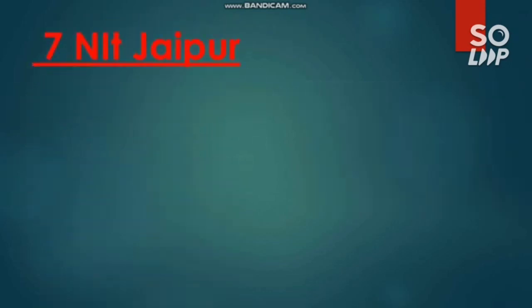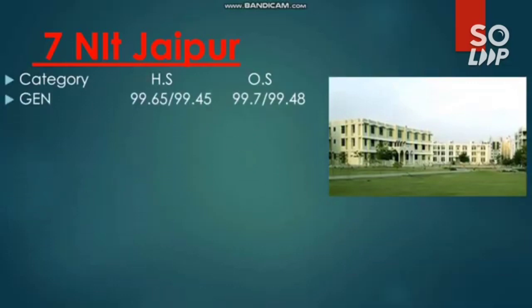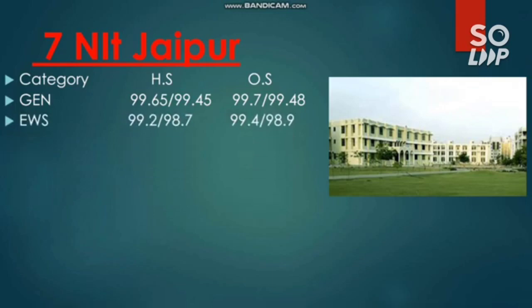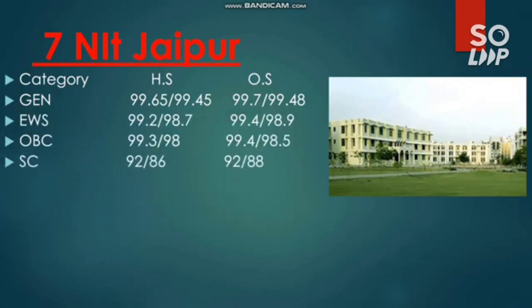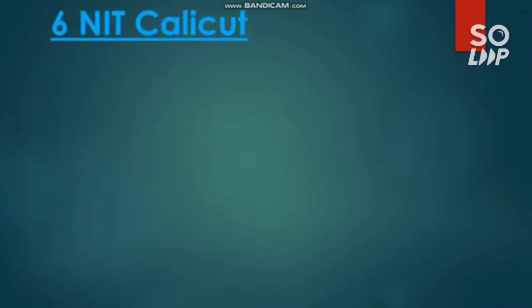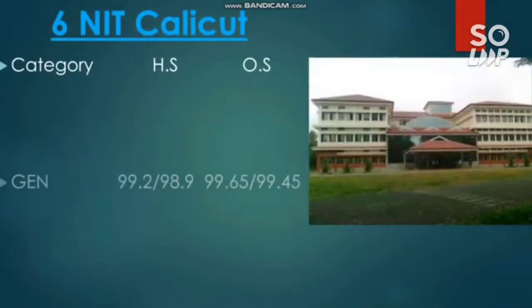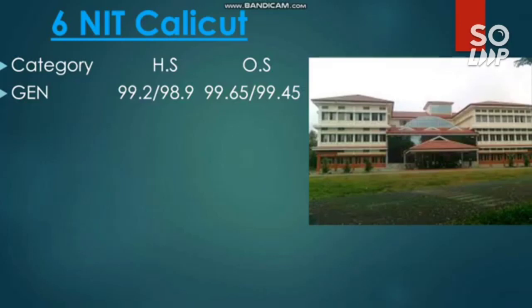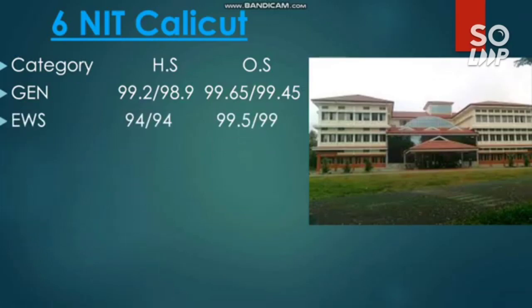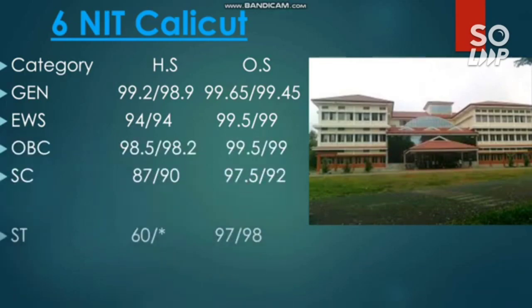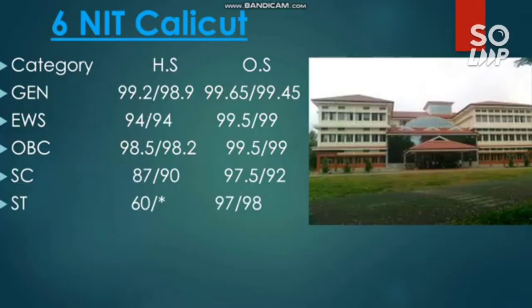Number seven, NIT Jaipur — CS cutoffs for other state: General 99.7 and 99.484 for male and female, EWS 99.4 and 98.9 for female, OBC 99.4 and 98.5, SC 92 and 88, and ST 97 and 98. Number six, NIT Calicut: General 99.65 and 99.45, EWS 99.5 and 99, OBC 99.5 and 99, SC 97.5 and 92, and ST 97 and 98 percentile.